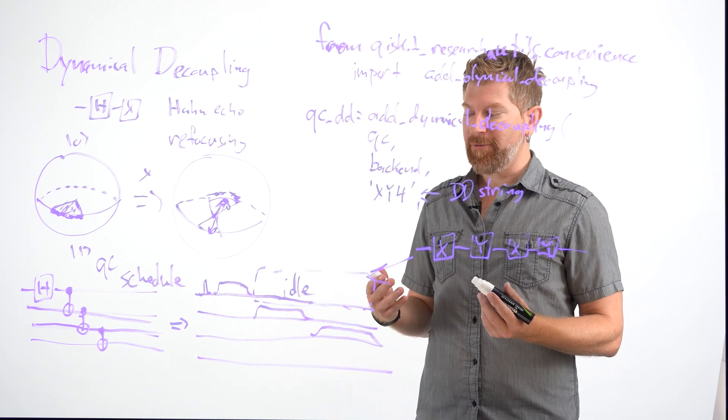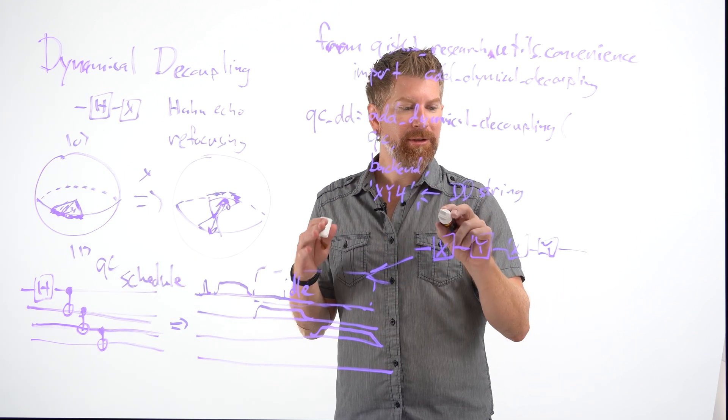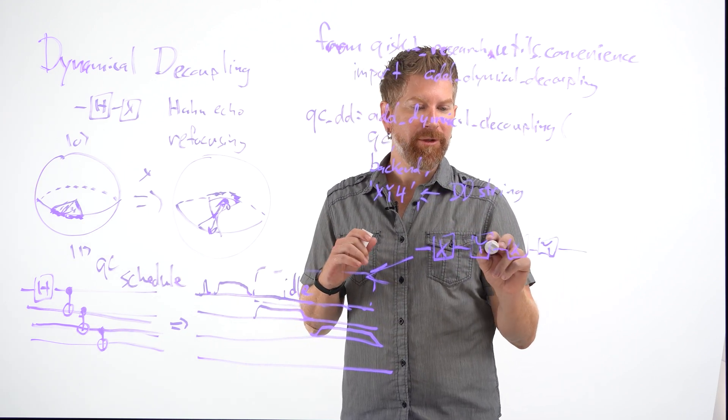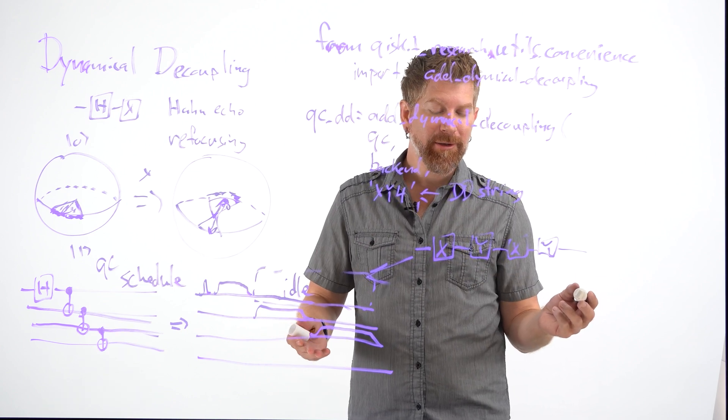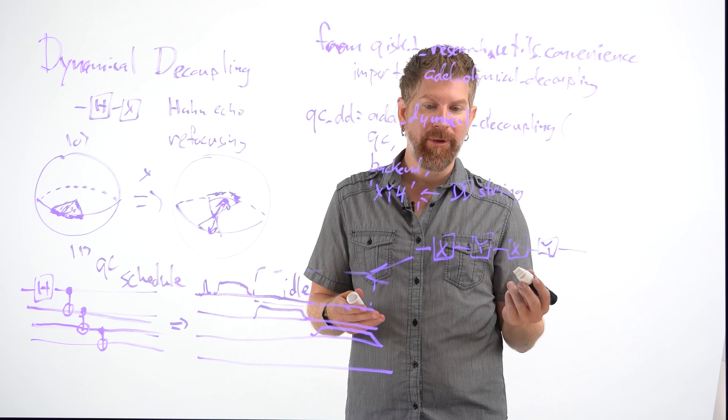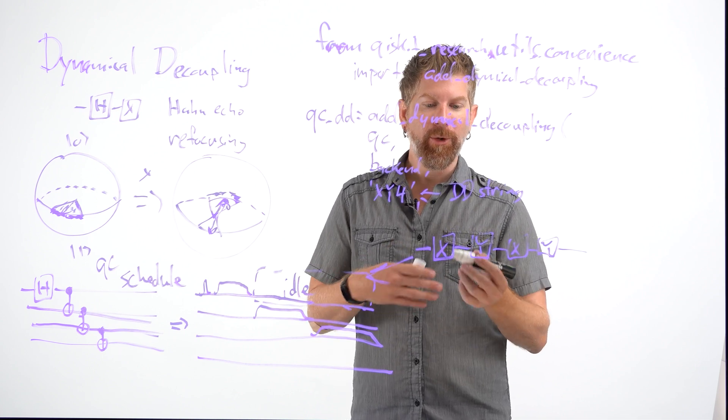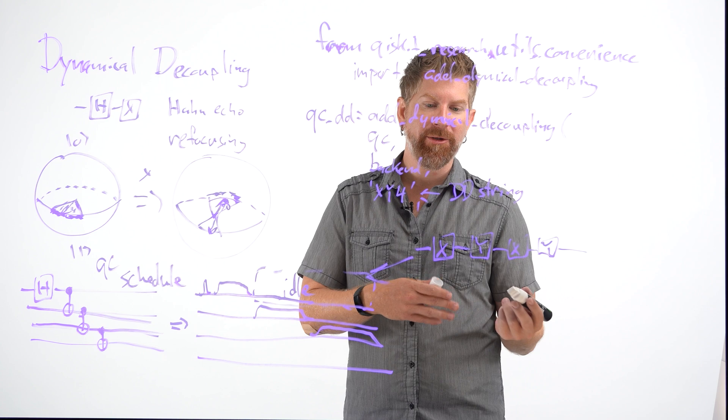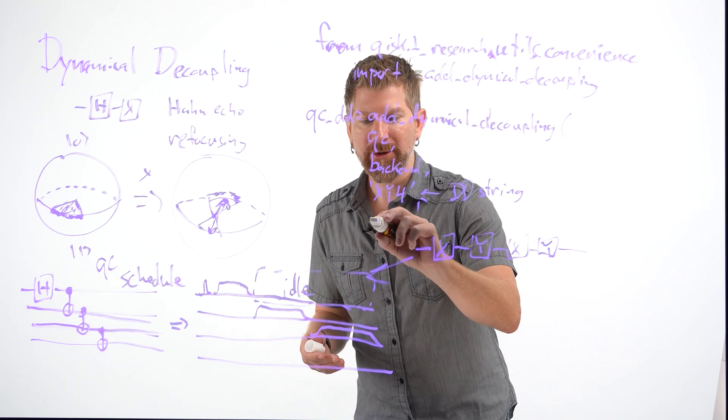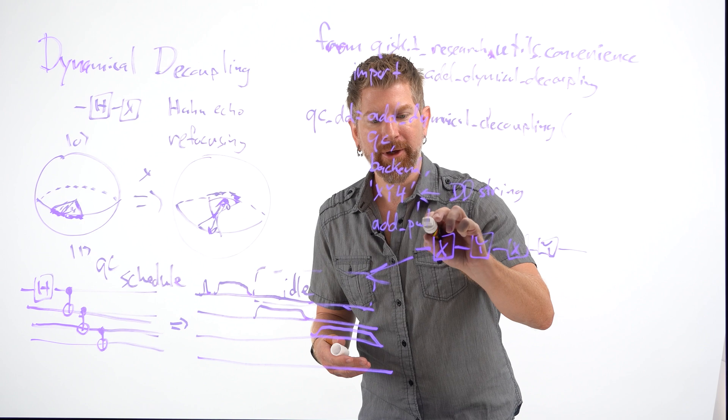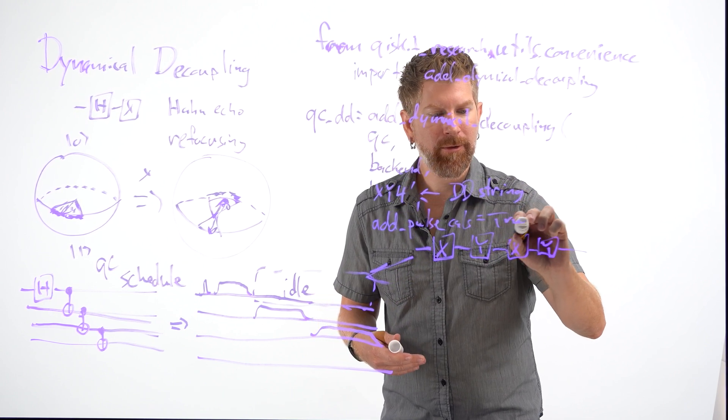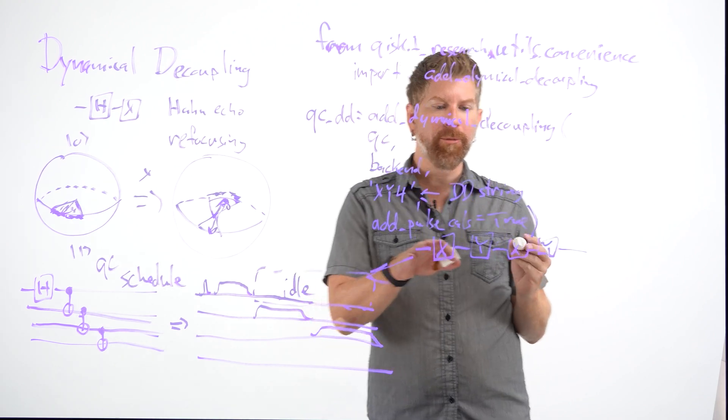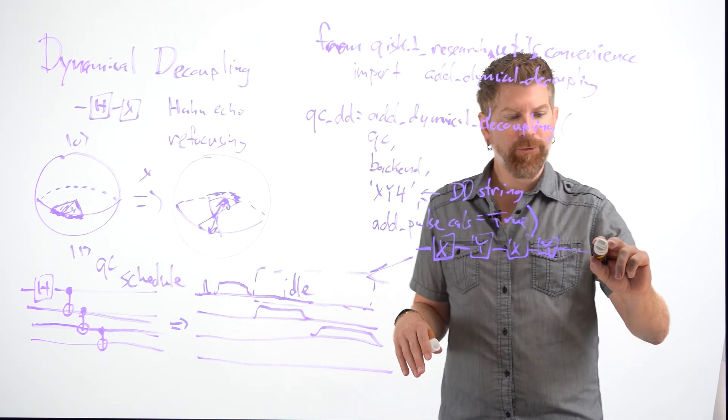Now, there's another flag that you can put in here. And it's because for some of these gates, they are not native basis gates of the backends. And so some pulse information needs to be put in. Say, for example, we can build the Y pulses out of X pulses, which the backend knows how to do. And we can just do this simply by adding the flag, add pulse cals equals true. We'll put in the pulse level information for this.